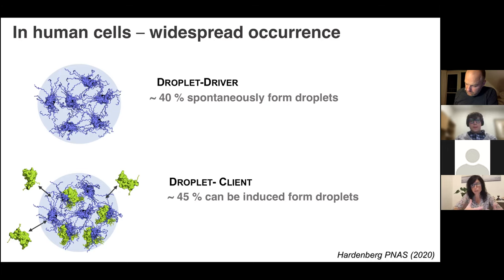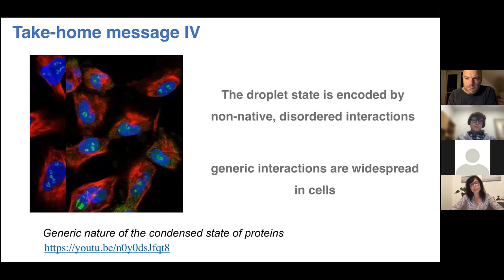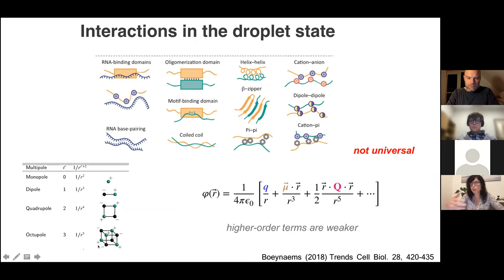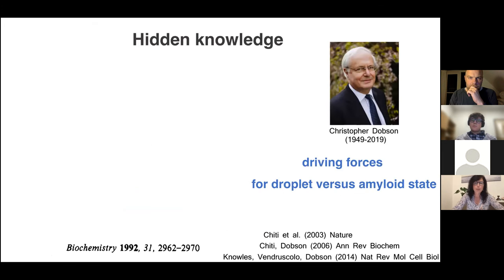Applying this to the whole human proteome, we find about 40% of proteins can spontaneously form droplets, with another 45% that can be induced. The importance is not only that phase separation is widespread—it's a physical necessity, as proteins like any other material have three states. Using generic principles, we can recapitulate this physical reality. The droplet state is encoded in non-native disordered interactions, and these generic interactions are widespread in cells. But you may still want to know the specific interaction chemistry for your system—collecting a zoo of interactions is not the way to go; what you need is the hidden knowledge.